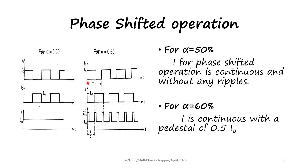In phase-shifted operation, two duty cycles are shown: α = 0.5 and α = 0.6. Alpha = 0.5 means each chopper is on for 50% of the time; alpha = 0.6 means each chopper is on for 60% of the time. When α = 0.5, the current is continuous with no ripples. When α = 0.6, the current is continuous only for a short period. The first chopper is on for 60%, but at 50% the second chopper turns on, so for 10% of the time both choppers are on and the current is twice I0. The minimum current is always I0, so current is continuous with a pedestal of half the load current.